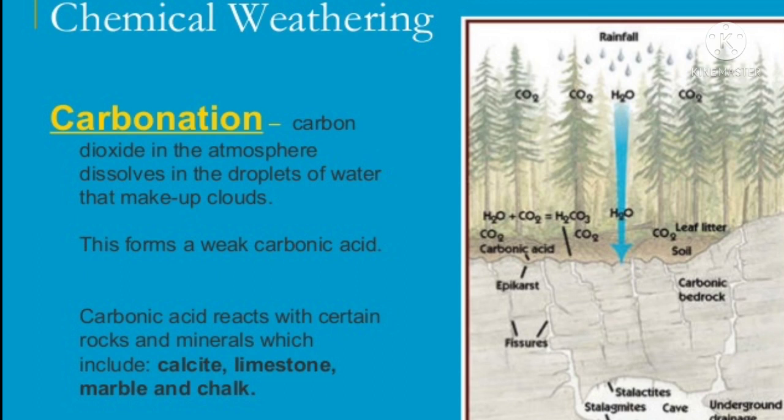In the carbonation process, atmospheric carbon dioxide comes into contact with rainwater and forms a weak carbonic acid. This carbonic acid reacts with carbonate rocks like calcite, limestone, marble, and chalk, and over time disintegrates them. This type of chemical weathering is also seen in hot and humid regions where water is available.